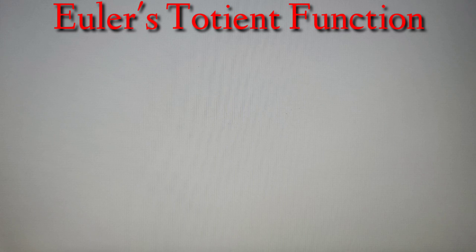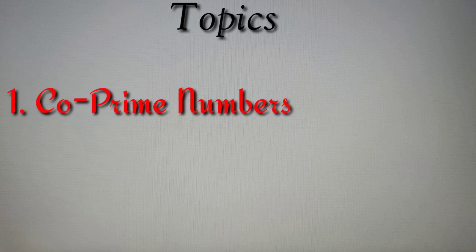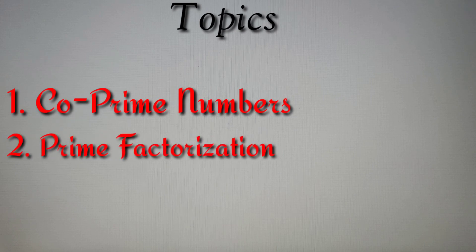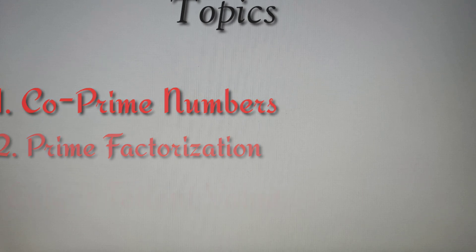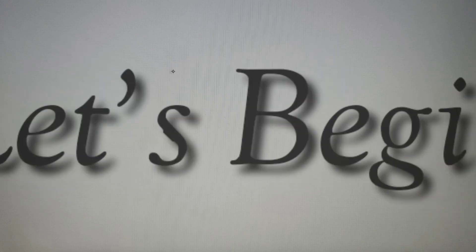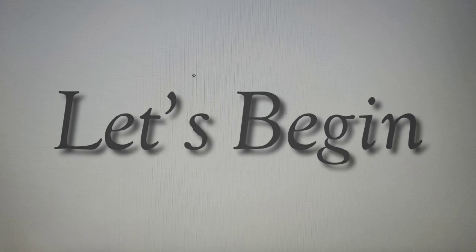In this video we'll discuss the following concepts: number one, what are co-prime numbers; number two, how to prime factorize a number; and number three, how to find the Euler's Totient function of a number. We will also discuss some examples on this topic. Do watch this video till the end because we have provided some practice questions at the end. So without further ado, let's begin.